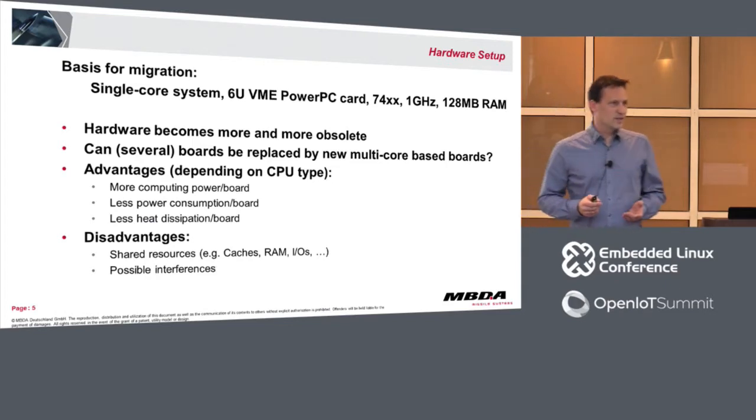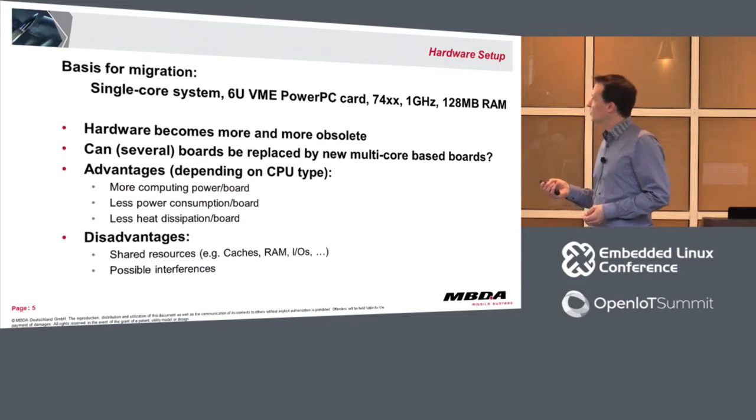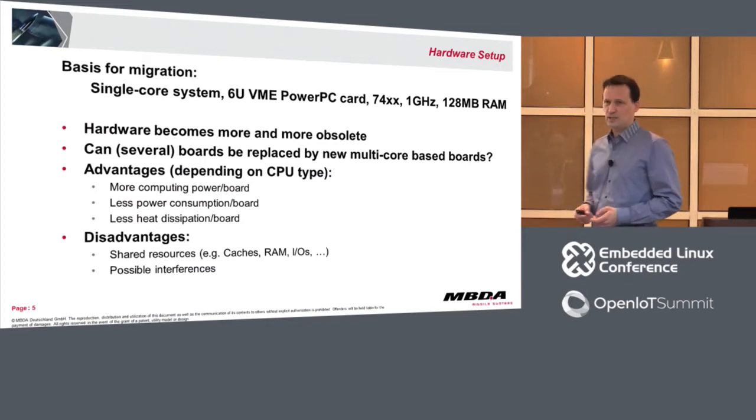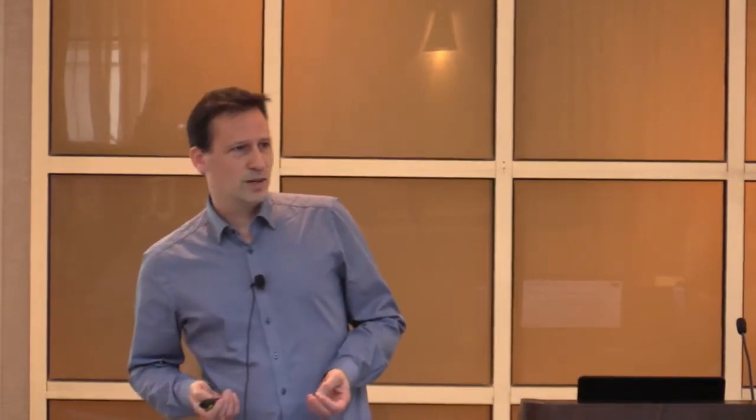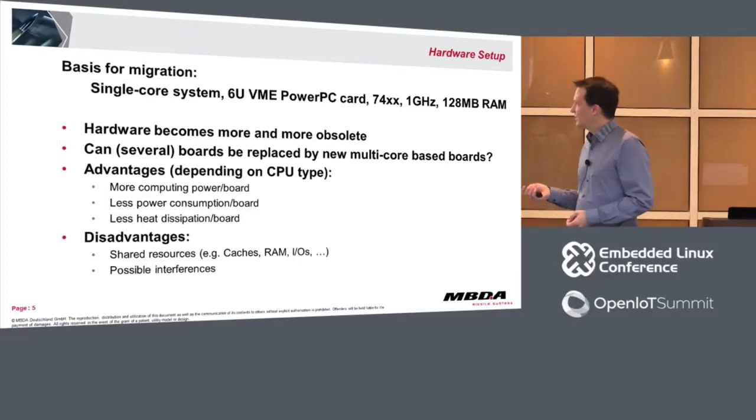When I started one year ago, I had a single-core processor system — a 6U VME PowerPC, a G4 PowerPC running at one gigahertz. It's a well-known processor in the embedded area. The hardware becomes more and more obsolete, and the question was: can I replace one or several boards with a new multicore board? Of course, you have a lot of advantages with multicore: more computing power, less power consumption for equivalent CPU performance, and less heat dissipation. These three points are always interesting in the embedded area.